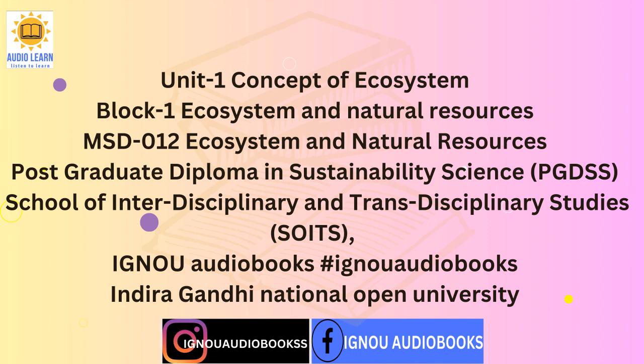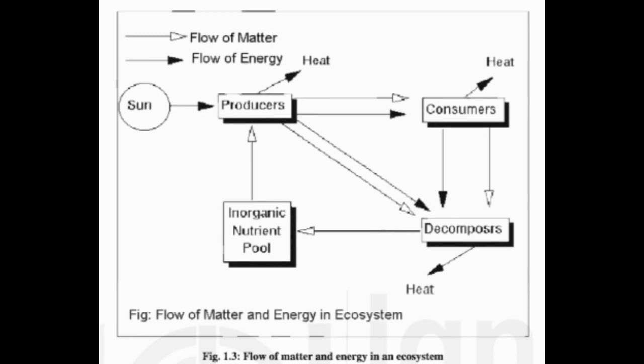Energy flow means transfer of energy from one trophic level to the next trophic level, and it is always unidirectional, flowing from producers to top consumers. Production means production or assimilation of biomass by different components of an ecosystem. The rate of biomass production by living beings in an ecosystem is called productivity. Decomposition is the breaking down of dead plant and animals and their excreta into simple compounds like carbon dioxide (CO2), water (H2O), and nutrients. Bacteria and fungi are the major decomposers. Nutrient cycling means movement of elements or compounds through living beings and across the ecosystem in characteristic pathways. Succession is the sequential change in the community structure resulting in establishment of a stable or climax community.